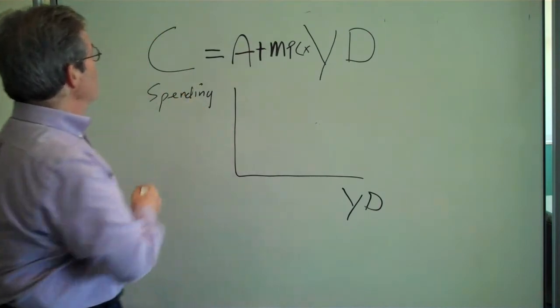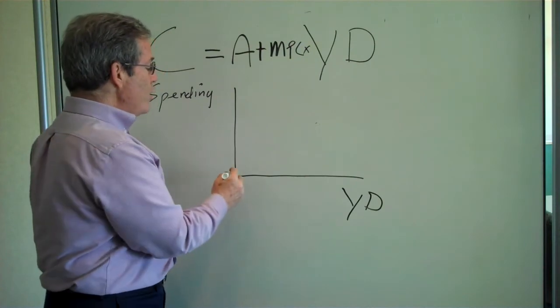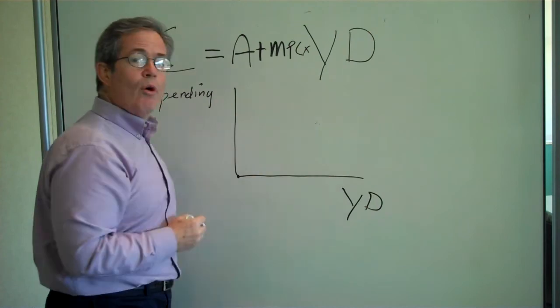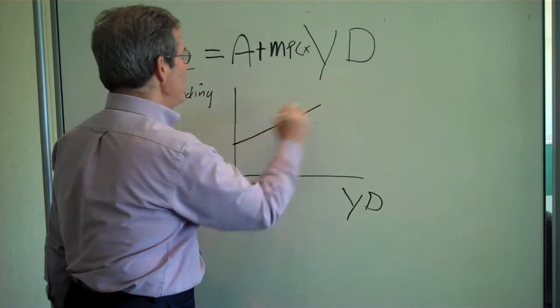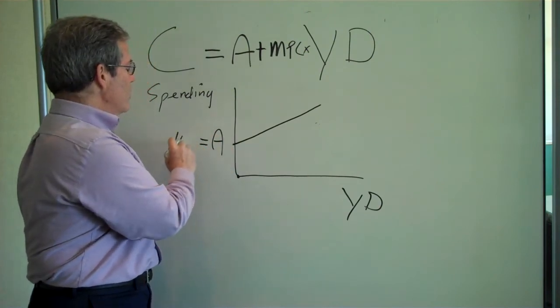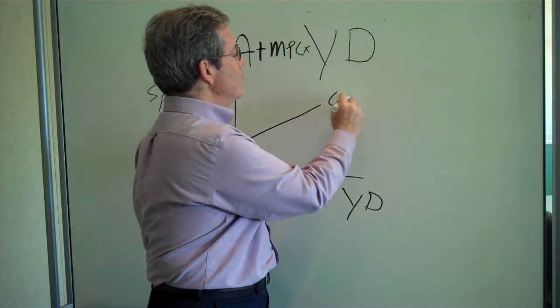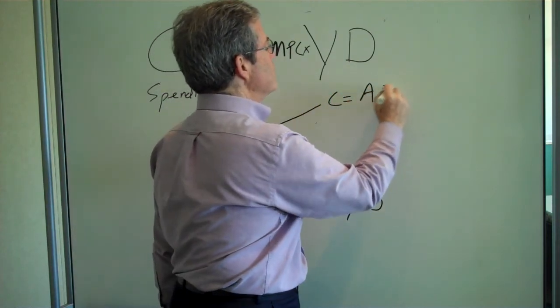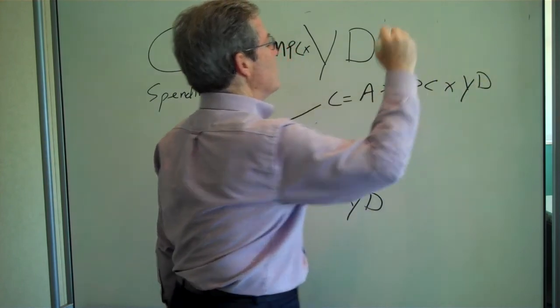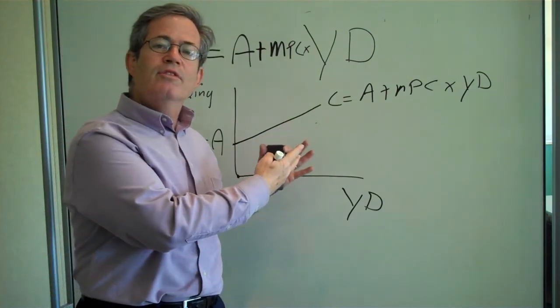And all this shows is that when disposable income goes up, consumer spending goes up. So this has a positive relationship. We know it doesn't start at zero, because even if you have zero income, you're still going to spend. How much will you spend? You'll spend A, say, a hundred dollars. And as disposable income goes up, your consumption goes up. This we call, voila, the consumption function. See you next time.